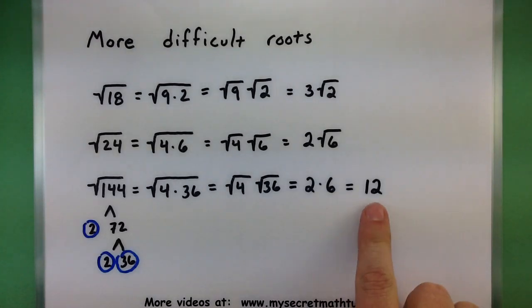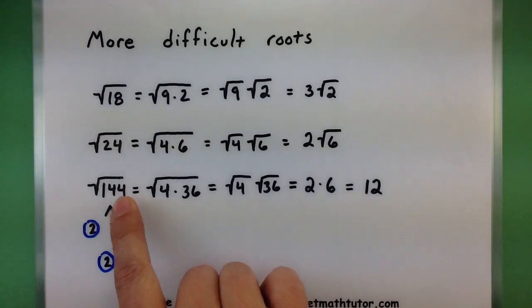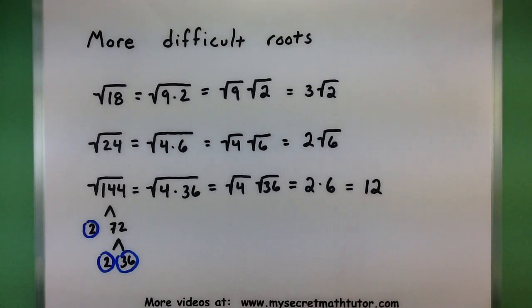So what this really means in the grand scheme of things is that when I multiply 12 by itself, 12 squared, it should equal 144. Or in the other direction, the square root of 144 is equal to 12. And there you go. That's just the basics about square roots and simplifying the more difficult ones. If you'd like to see some more videos, please visit MySecretMathTutor.com.